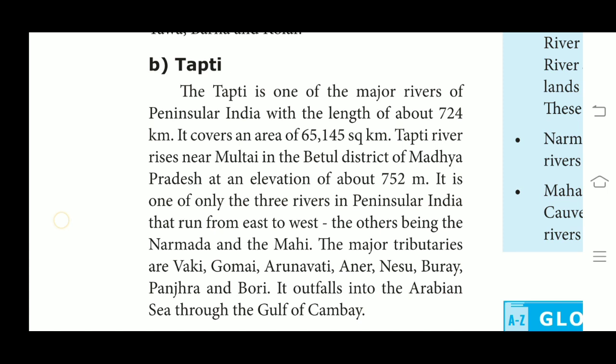Its basin covers parts of Madhya Pradesh, Gujarat and Maharashtra. The coastal plains between the Western Ghats and the Arabian Sea are very narrow, hence the coastal rivers are short. The major tributaries of Tapi river are Vaigi, Gomai, Arunavati, Anar, Nesu, Purna, Panjhara and Toru. Now we see the characteristics of South Indian rivers.